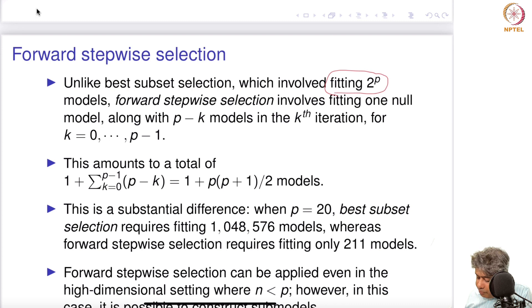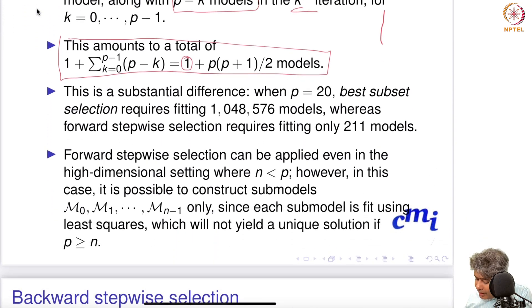Unlike best subset selection which involves fitting 2^p many models, forward stepwise selection involves fitting the null model along with p-k many models in the kth iteration. The total number of models you have to fit is p(p+1)/2 + 1, one null model. If you have p = 20, best subset selection requires fitting 1,048,576 models, whereas forward stepwise selection requires fitting only 211 models. So a huge improvement in terms of time complexity if you do forward stepwise selection.